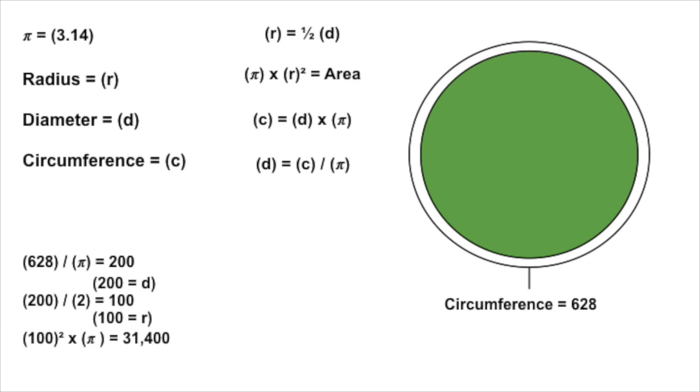So now we square 100 — pi r squared — and 100 times 100 is 10,000. Now we need to multiply that by pi to find the area. And what's 10,000 times 3.14? 31,400. So a circle whose circumference is 628 feet will have an area of 31,400 square feet. Is that what you found as well?